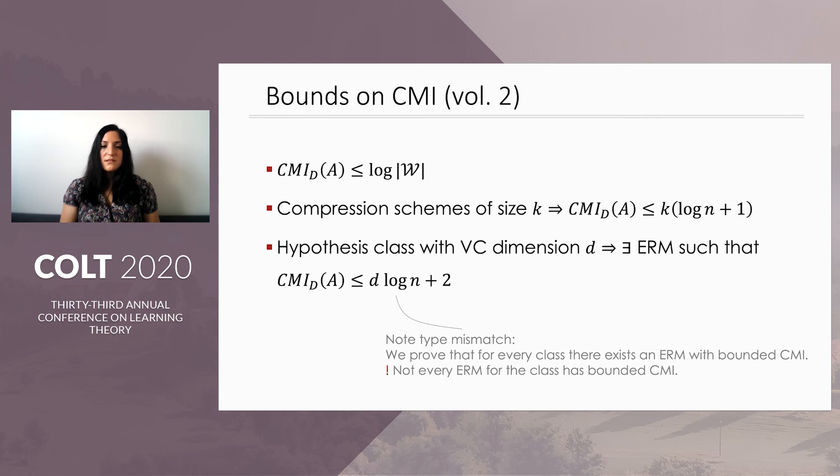Now, note that there's a tight mismatch between the two notions, between uniform convergence, or VC dimension, and CMI. VC dimension is a property of the hypothesis space. So that's basically the range of the outputs of any algorithm that learns in that space, whereas CMI is a property of the algorithm itself. So we managed to connect the two by proving that for every class there exists an ERM with low CMI, but it's not true that every ERM for this class has bounded CMI.